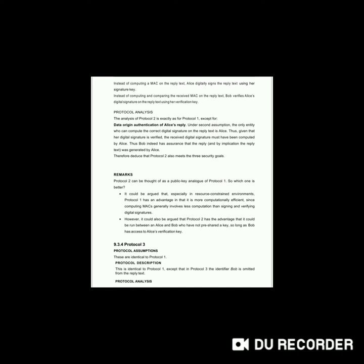The analysis of protocol 2 is exactly as protocol 1 except for the data origin authentication of Alice's reply. Under the second assumption, the only entity who can compute the correct digital signature on the reply text is Alice. Thus, given that her digital signature is verified, the received digital signature must have been computed by Alice. Thus, Bob indeed has assurance that the reply was generated by Alice. Therefore, protocol 2 almost meets the three security goals.